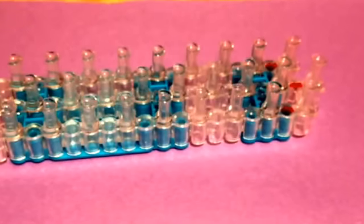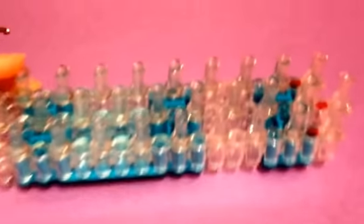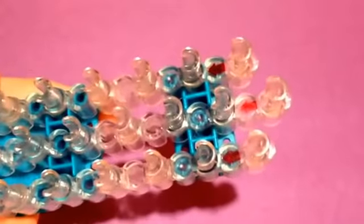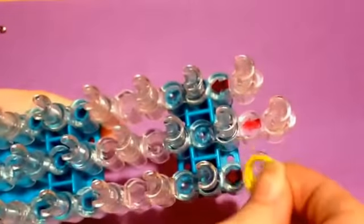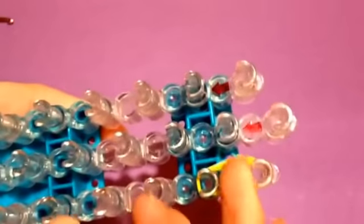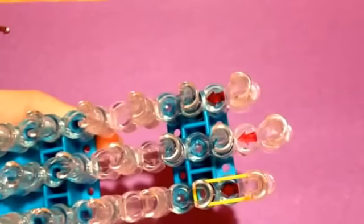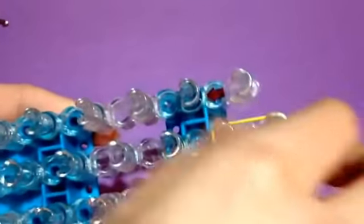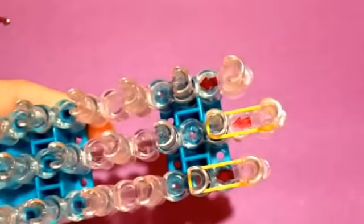So you'll be using double bands to make this. Take two yellow rubber bands and go down on the right. Take two more, go down in the center, take two more, go down on the left.